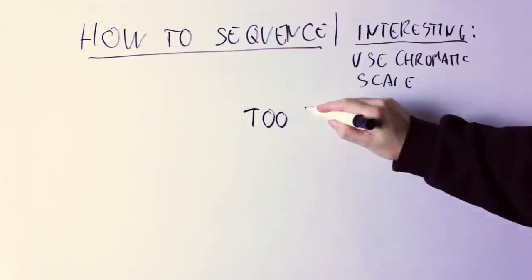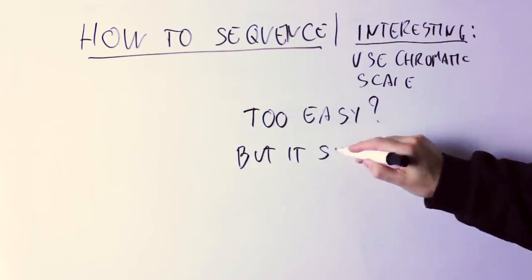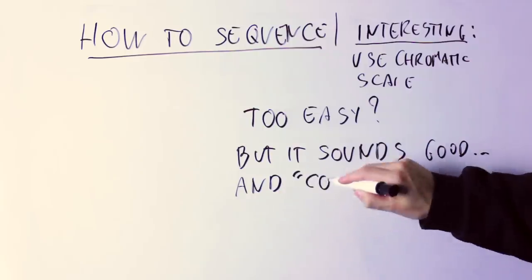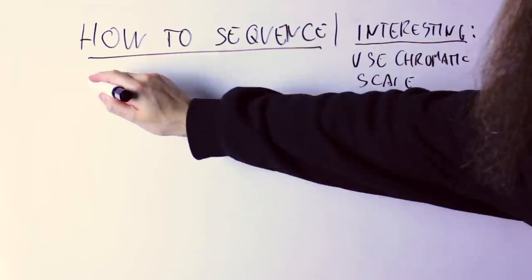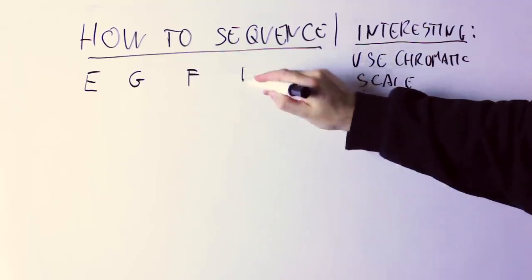Often we guitar players don't do that because this looks too simple to us, but in fact this thing can sound interesting. So for instance, if I take one of my melody variations I found before, the melody E, G, F, B...